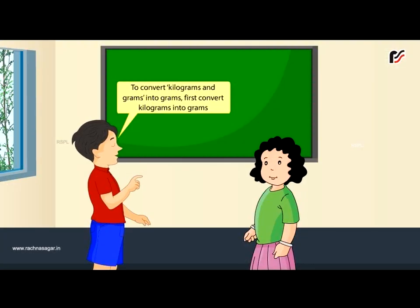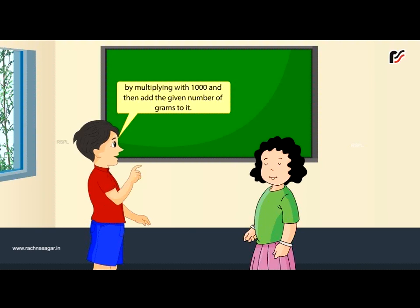To convert kilograms and grams into grams, first convert kilograms into grams by multiplying with 1000, and then add the given number of grams to it.